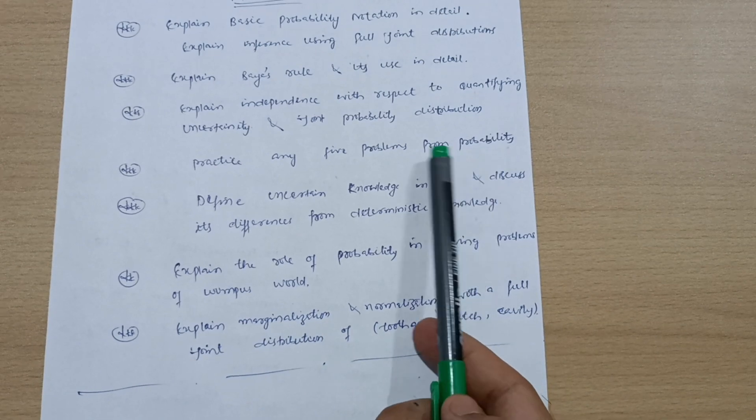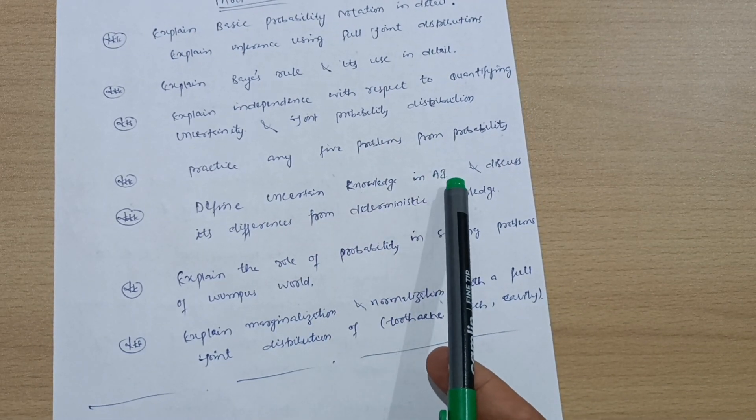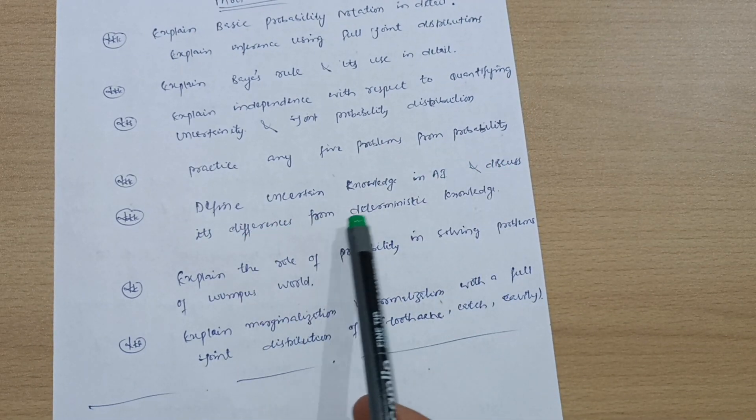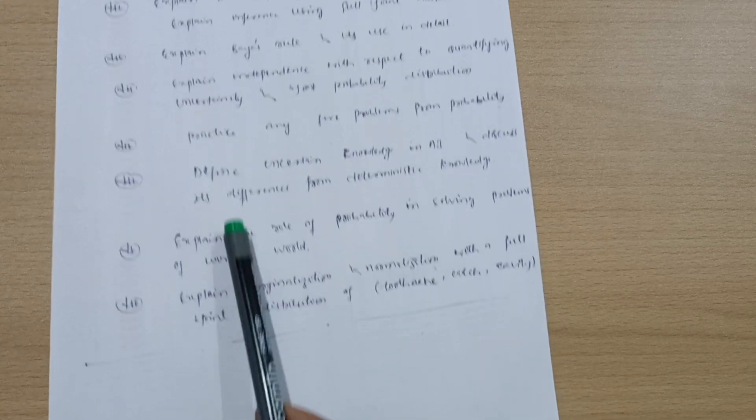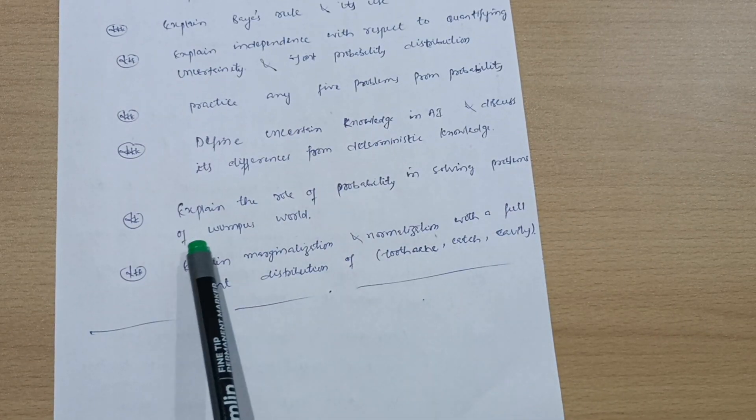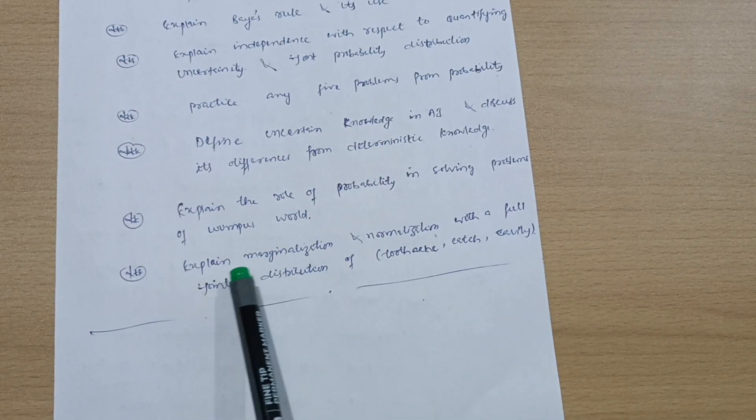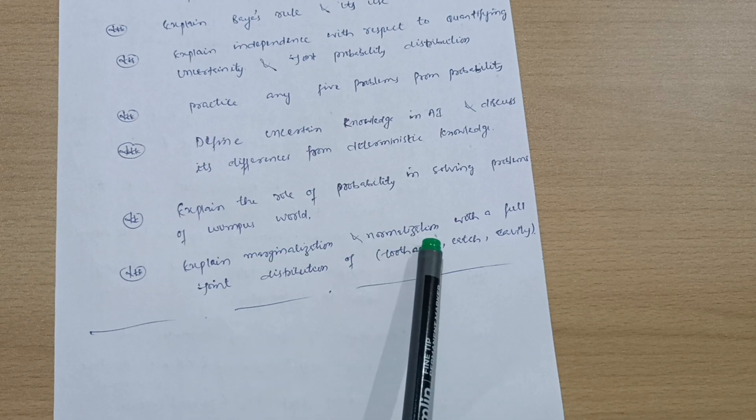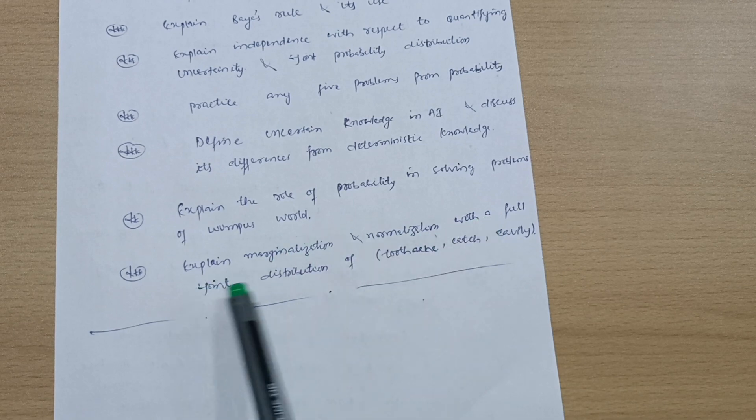Define uncertain knowledge in artificial intelligence and discuss its difference from deterministic knowledge. Explain the role of probability in solving problems of wumpus world. Explain marginalization and normalization with a full joint distribution of toothache and cavity.